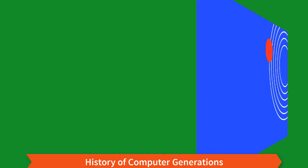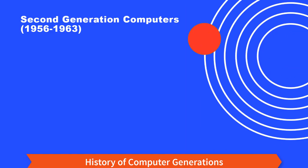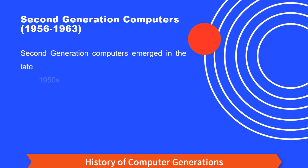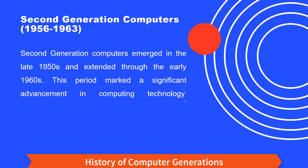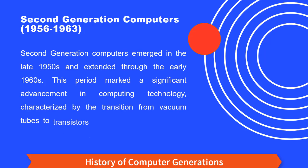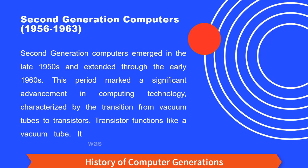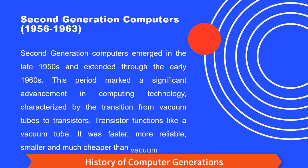Second generation computers emerged in the late 1950s and extended through the early 1960s. This period marked a significant advancement in computing technology, characterized by the transition from vacuum tubes to transistors. The transistor functions like a vacuum tube, but was faster, more reliable, smaller, and much cheaper than the vacuum tube.